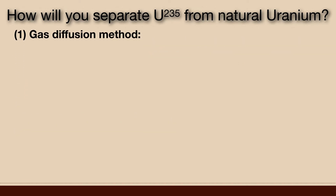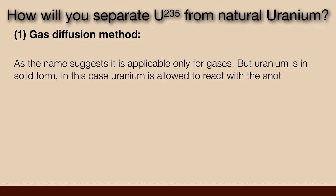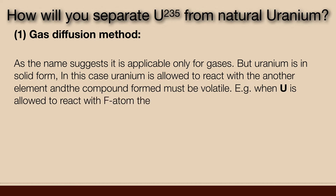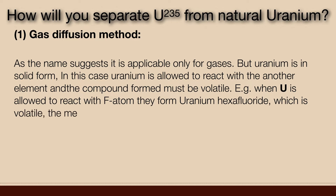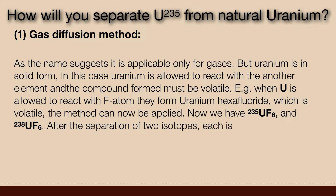Gas diffusion method. As the name suggests, it is applicable only for gases. But uranium is in solid form. In this case, uranium is allowed to react with another element and the compound formed must be a volatile compound. For example, when uranium is allowed to react with fluorine atoms, they form uranium hexafluoride, which is volatile. The method can now be applied. Now we have uranium-235 hexafluoride and uranium-238 hexafluoride. After the separation of two isotopes, each isotope is defluorinated to obtain free uranium.